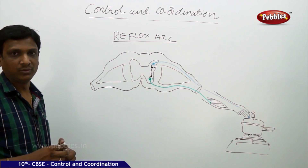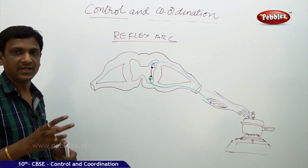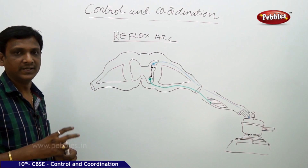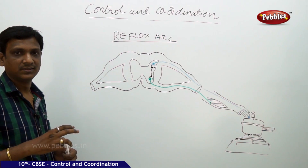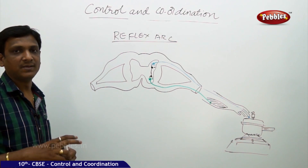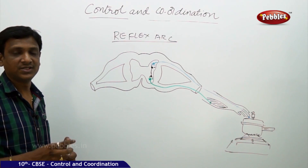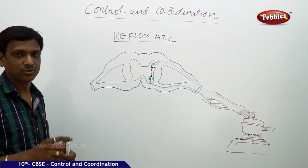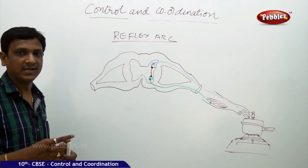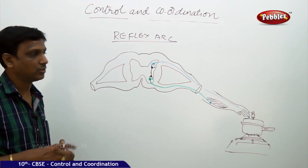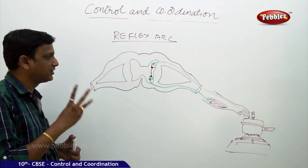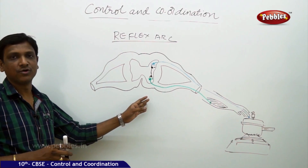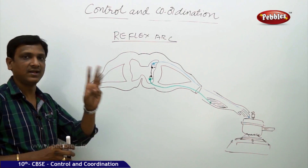The information about the stimuli is taken by one neuron, that is analyzed by another neuron. The decision to the effector organ is carried by another neuron. So three different types of neurons are involved in the execution of a reflex arc.